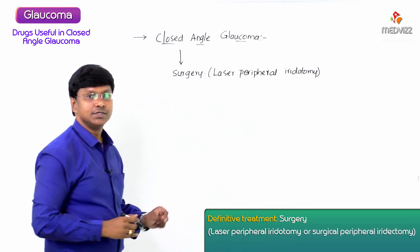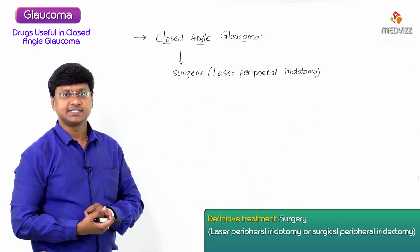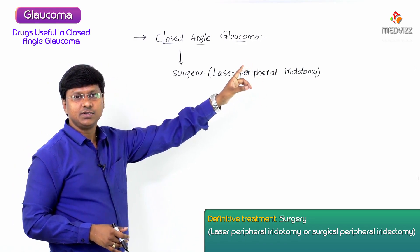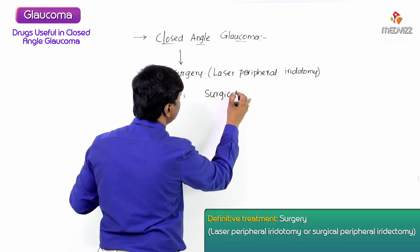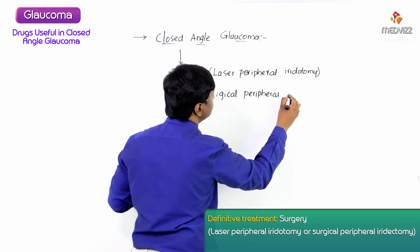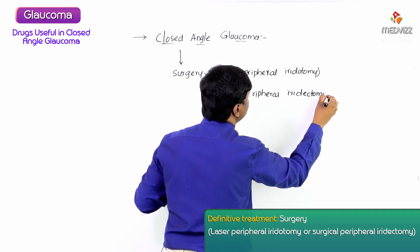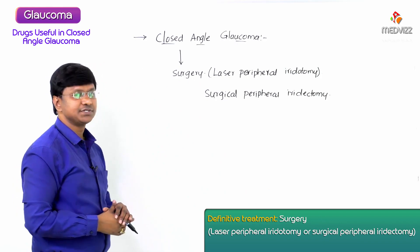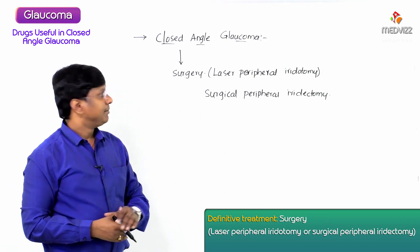Our other surgical option is surgical peripheral iridectomy. Note: iridotomy is an opening of the iris, whereas iridectomy is the other surgical option — surgical peripheral iridectomy. These are the surgical options available for the treatment of closed-angle glaucoma.